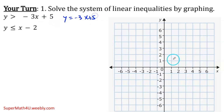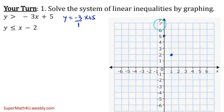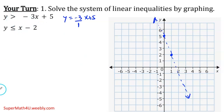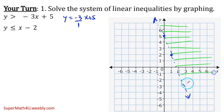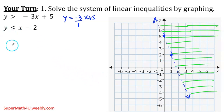For y > -3x + 5: the y-intercept is 5, my slope is negative 3 over 1. I go down 3 and 1 to the right — those are my two points. There's no equal in the inequality, so my line is going to be a dashed line. Because it has greater than, the shade is going to be to the right — from my line to the right. That entire half-plane is shaded.